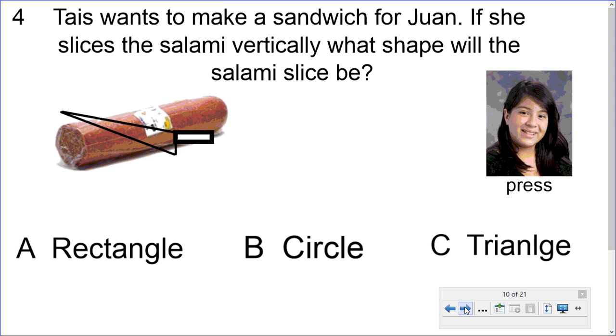So we're going to take a look at something here that you might have seen. I have my student, Thais. She wants to make a sandwich for her friend, Juan. If she slices the salami vertically, that's up and down. There's our knife. What shape will the salami slice be? So this is pretty much like a cross-section, where she's slicing it straight up and down.